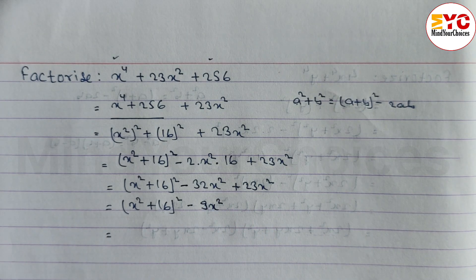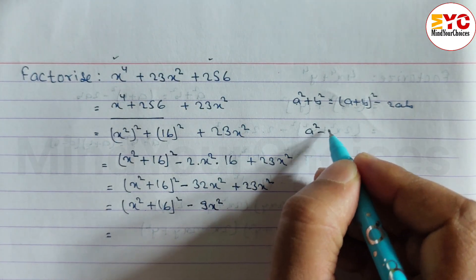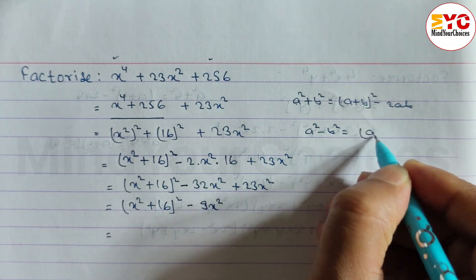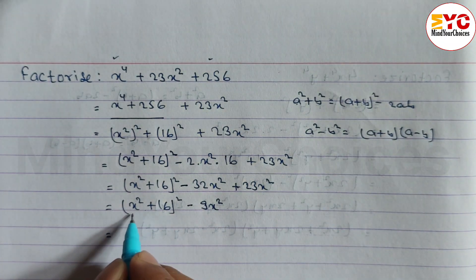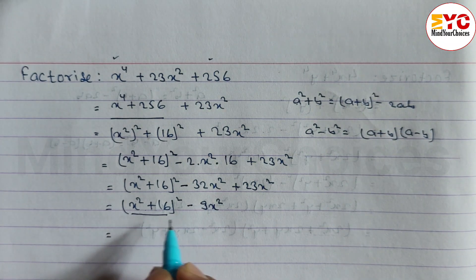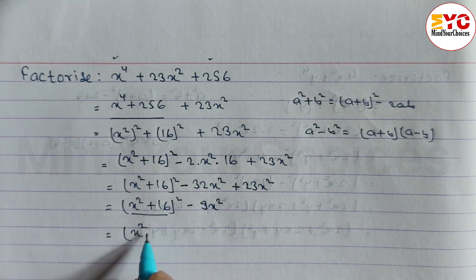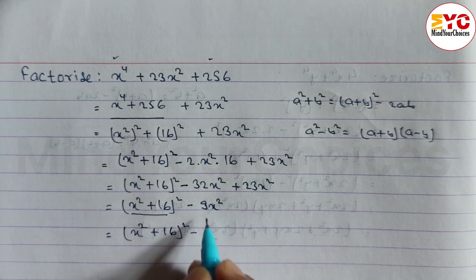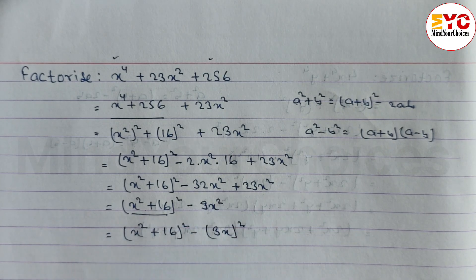Now we convert this into the form a² − b². The formula for a² − b² is (a + b)(a − b). Here a = x² + 16, and b² = 9x², so the square root of 9 is 3, making b = 3x.